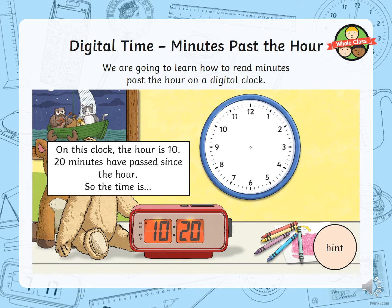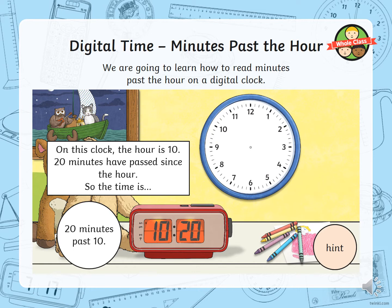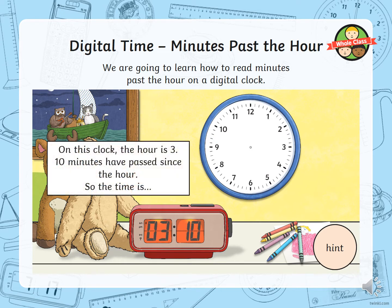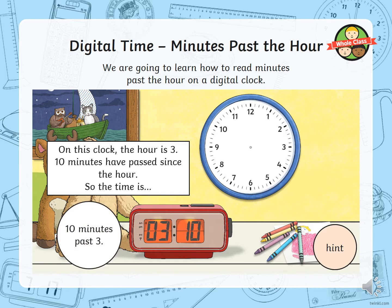On this clock, you can see the hour is ten and twenty minutes have passed since the hour, so the time is twenty minutes past ten. And on this next clock, the hour is three and ten minutes have gone past three o'clock, so we would say it is ten minutes past three.